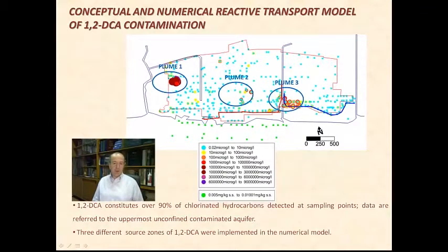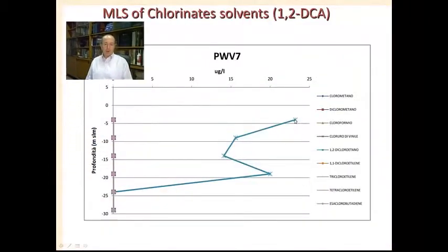We start with our numerical model, reactive numerical model, related to the three source areas, the three areas where the plume of this type of contaminant has been found. And of course we take into account, carefully take into account, as I mentioned more time during my lecture, the multilevel sampling. Because the multilevel sampling gives you an idea of the concentration with depth, which is very important, not only in general for transport model, but is necessary if you want to go to a reactive transport model.